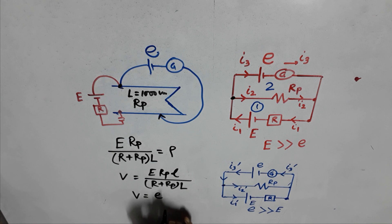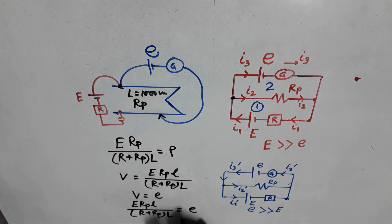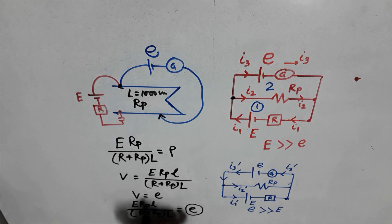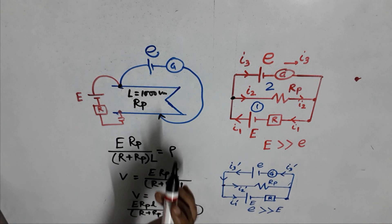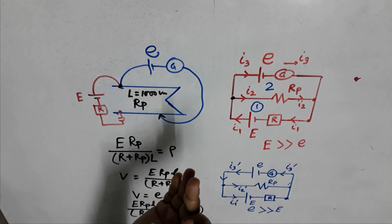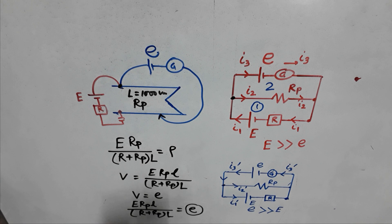When the jockey is placed such that v = e exactly, no current flows through the galvanometer (null point). Then e = E·Rp·L/(R + Rp), allowing us to find the unknown EMF e. Capital E, Rp, R, and L are all known. This explains how deflections occur in one direction or the opposite, and why a null point is obtained at a specific length of the potentiometer wire.